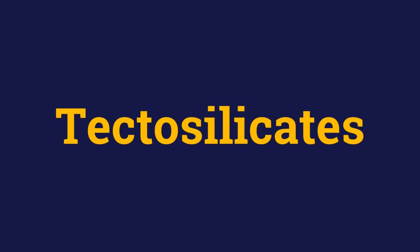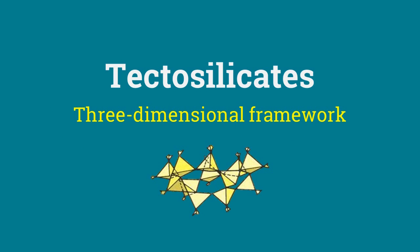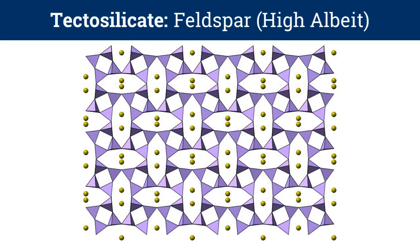Finally, we have tectosilicates. In tectosilicates, all the oxygen ions in each SiO4 tetrahedron are shared with a neighboring tetrahedron. This results in a stable, strongly bonded structure with an Si:O ratio of 1 to 2. This slide shows the silicate structure of high albite, a feldspar, showing a three-dimensional network of SiO4 along with systematic arrangement of sodium cations. Approximately 64% of the rocky crust of Earth is made up of minerals which are tectosilicates.